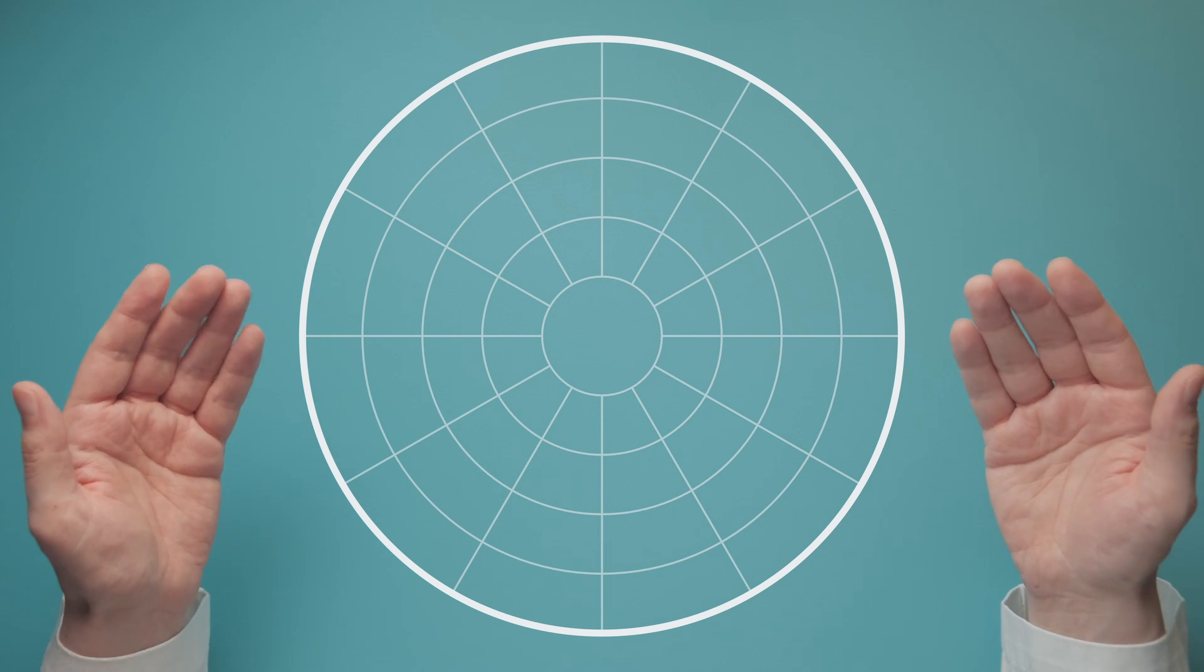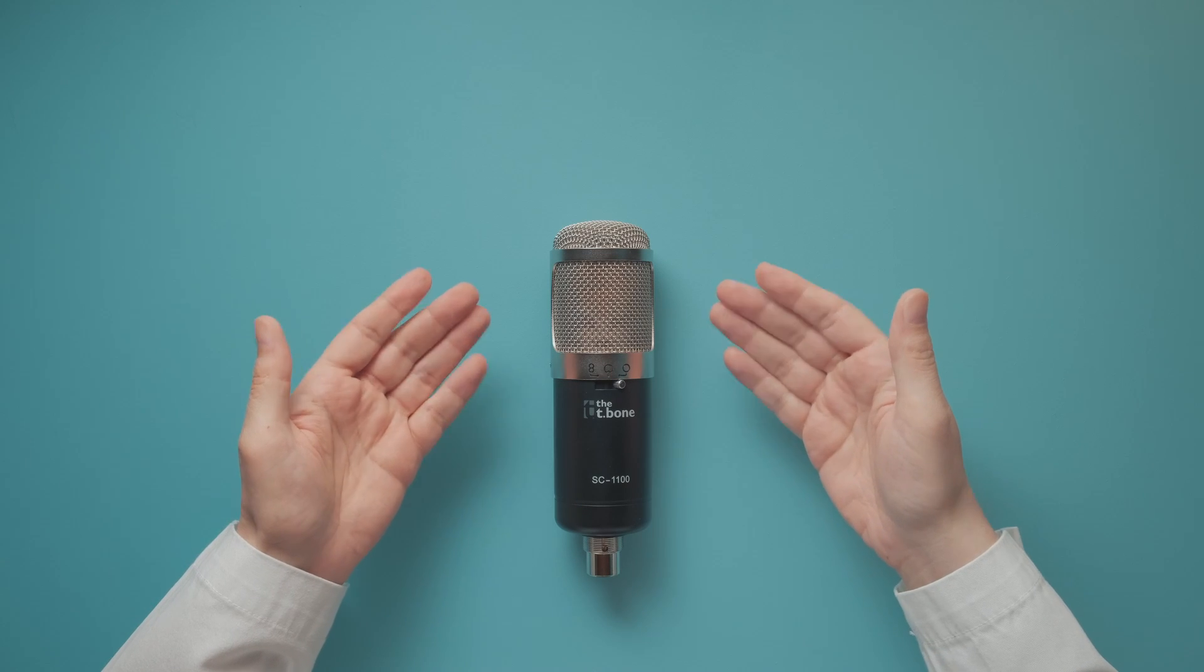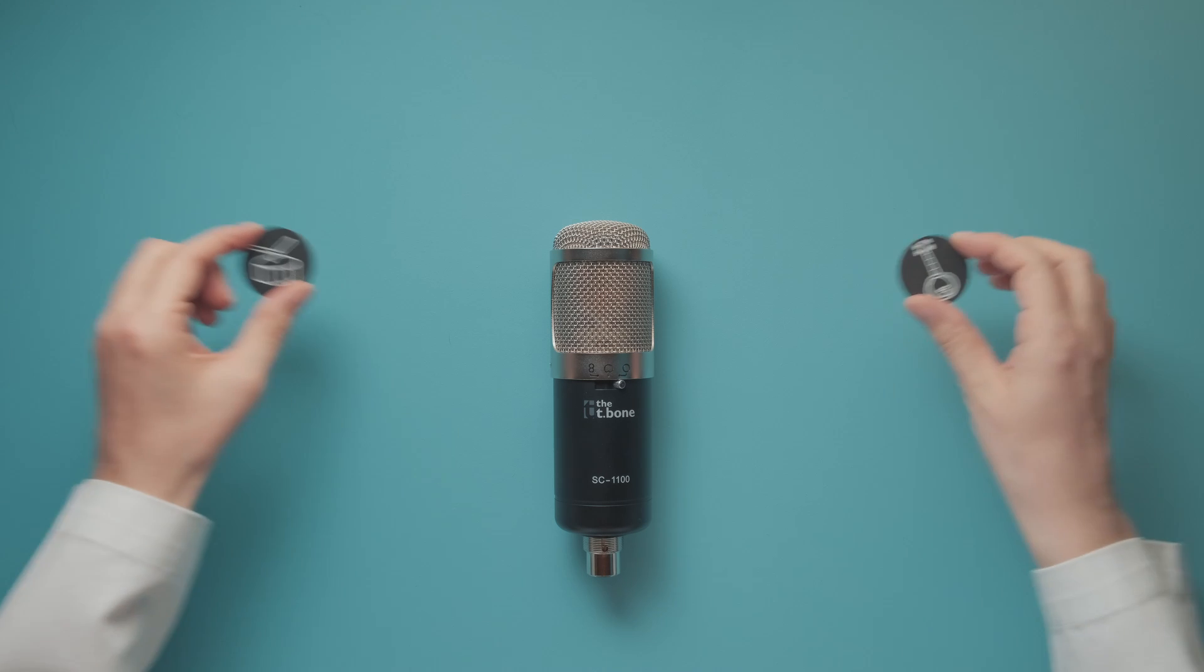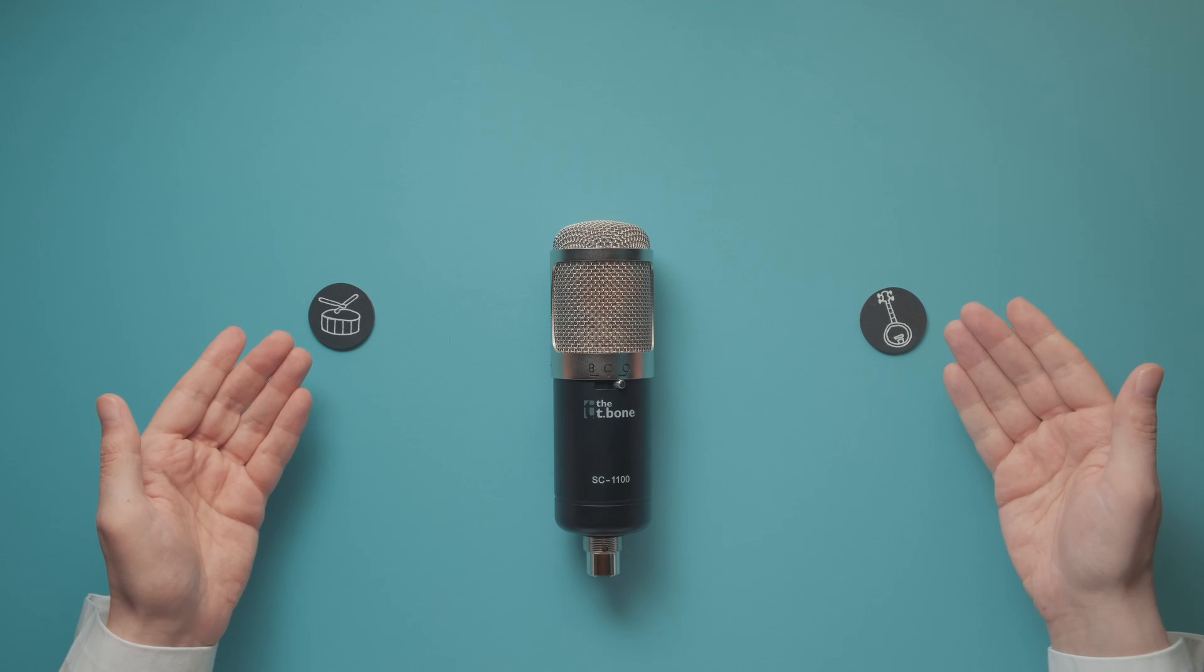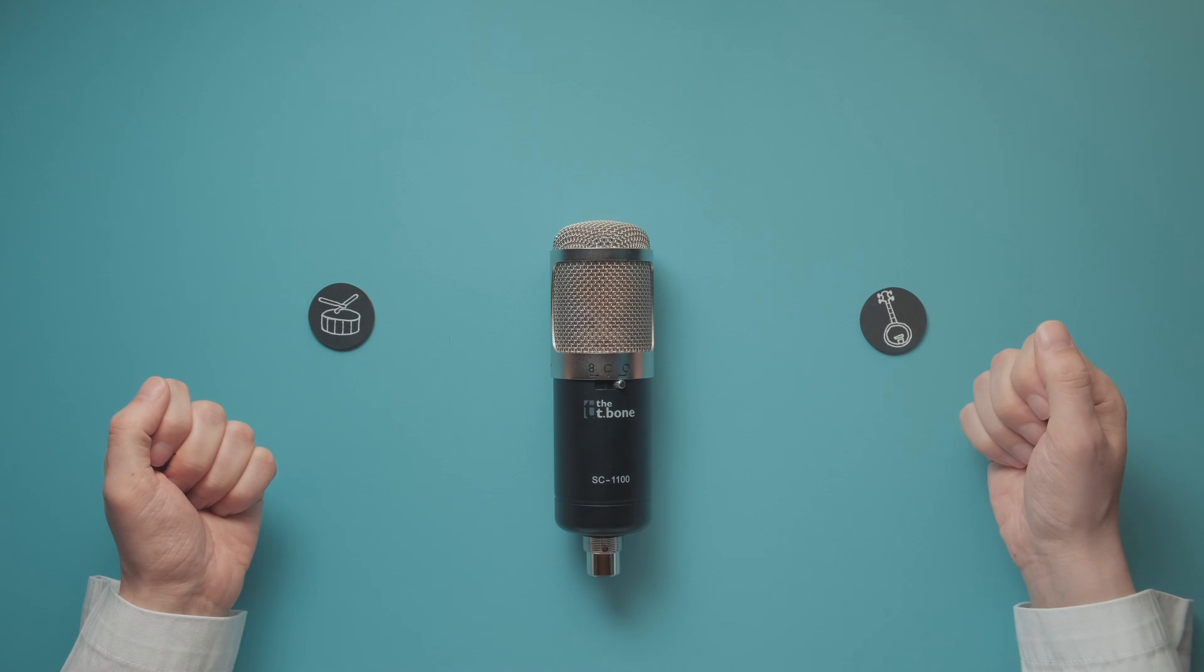In fact, this is how it was done in the early days of recording. There was just one omnidirectional microphone in the middle of the studio and you had to place the musicians around it. If you wanted a singer or an instrument to be louder on the recording, you had to place them closer to the microphone.